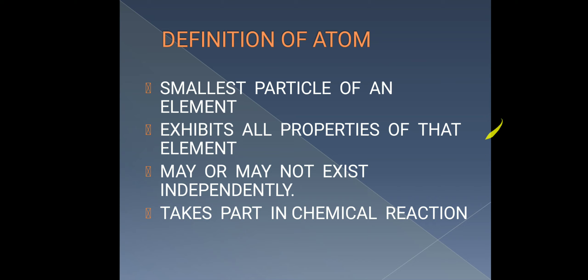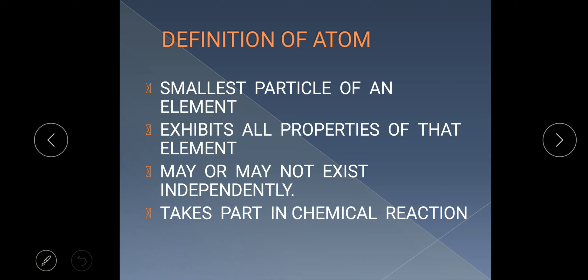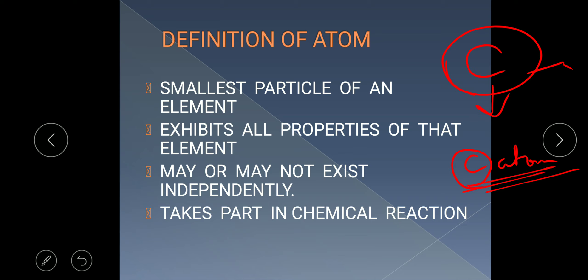Pure substance was classified into two categories: element and compound. The element's smallest particle is the atom, and it will exhibit all the properties of the element. For example, there is carbon element and carbon element will have the carbon atom. This carbon atom will show all the properties of carbon — that it is a non-metal, and it will do the sharing of electrons, which we will discuss in the next classes.